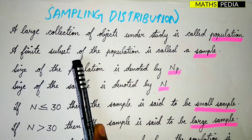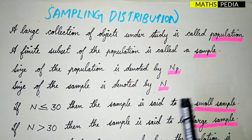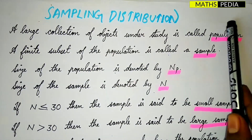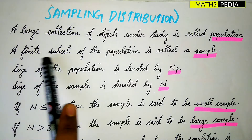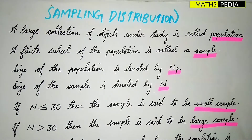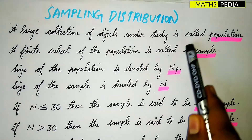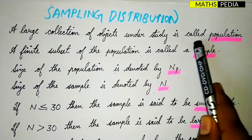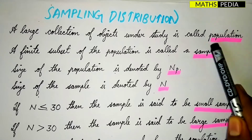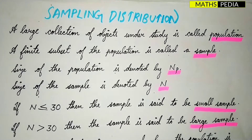The second point is sample. A finite subset of the population — from a given population we are taking out some data or some finite subset in order to research on them. That is nothing but sample. A small amount of data taken from the population is said to be the sample.